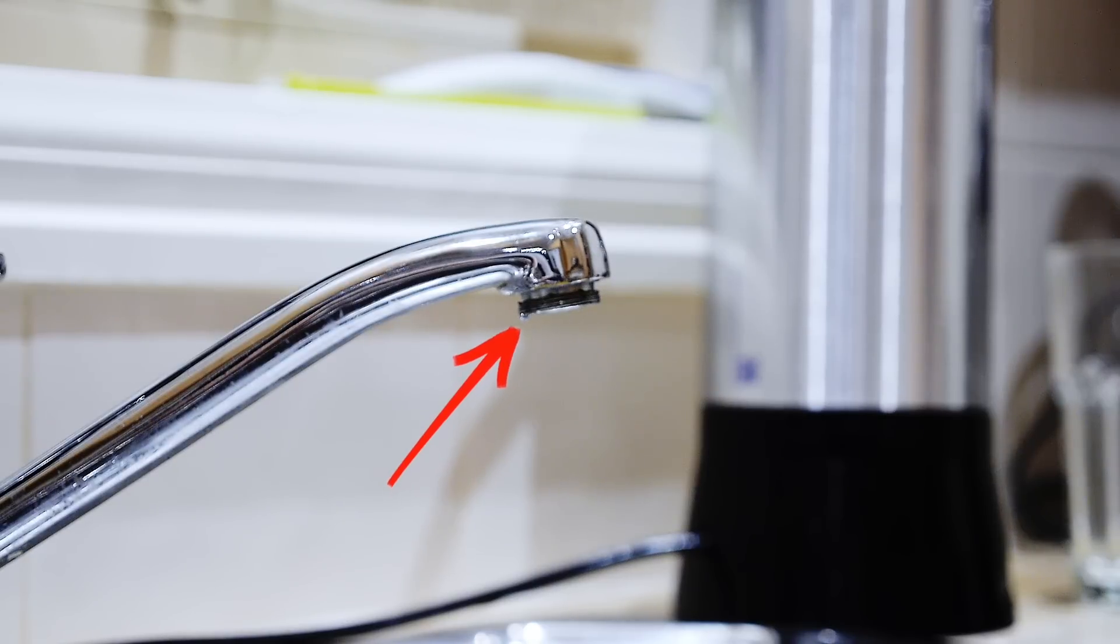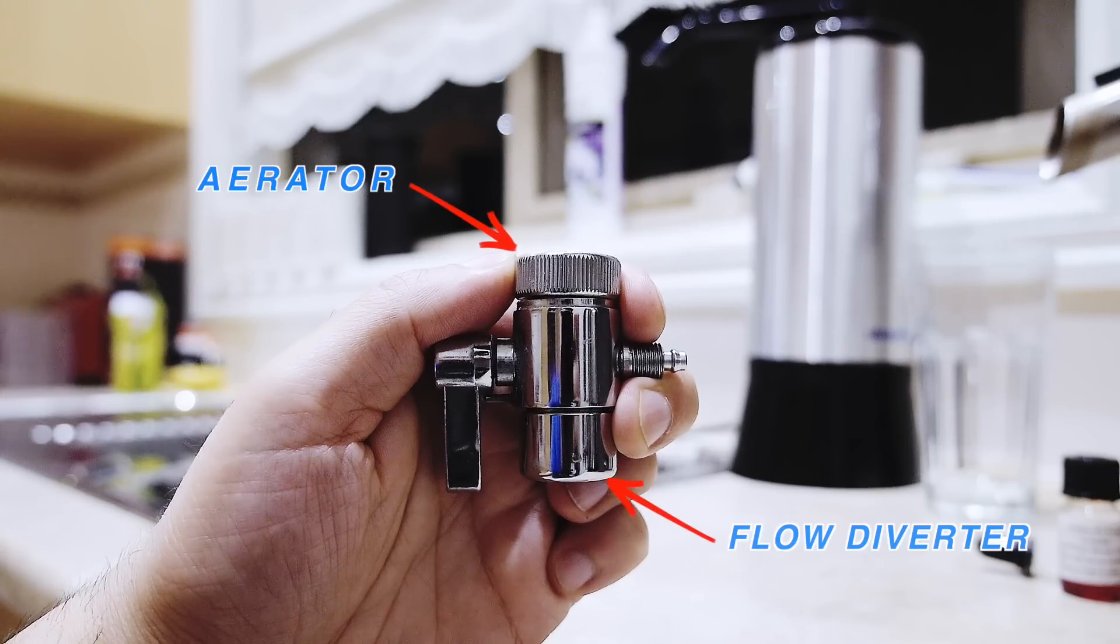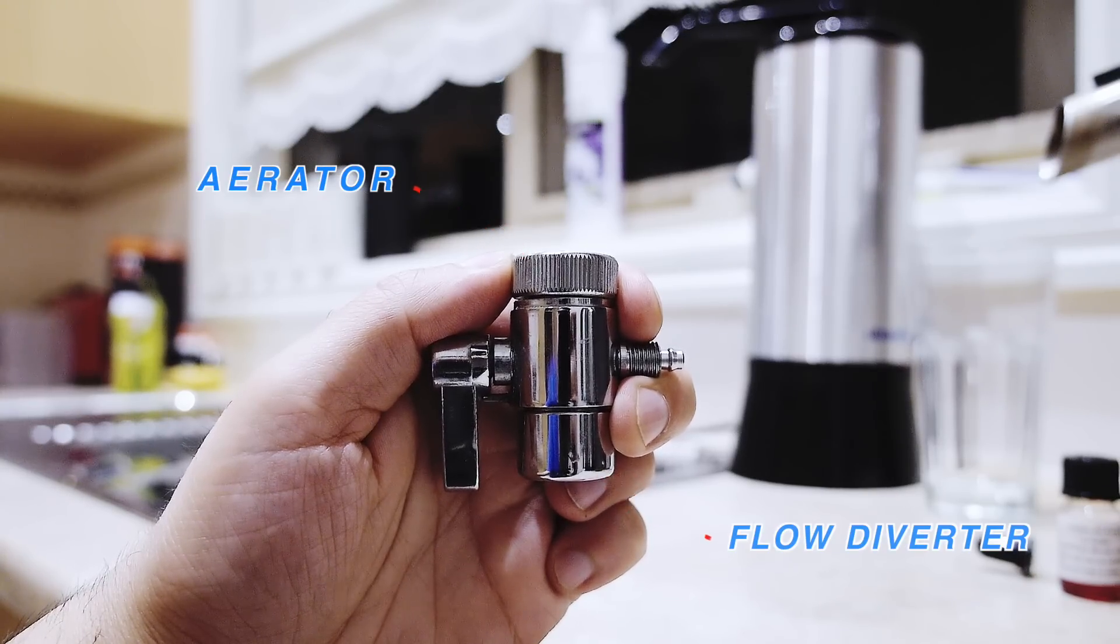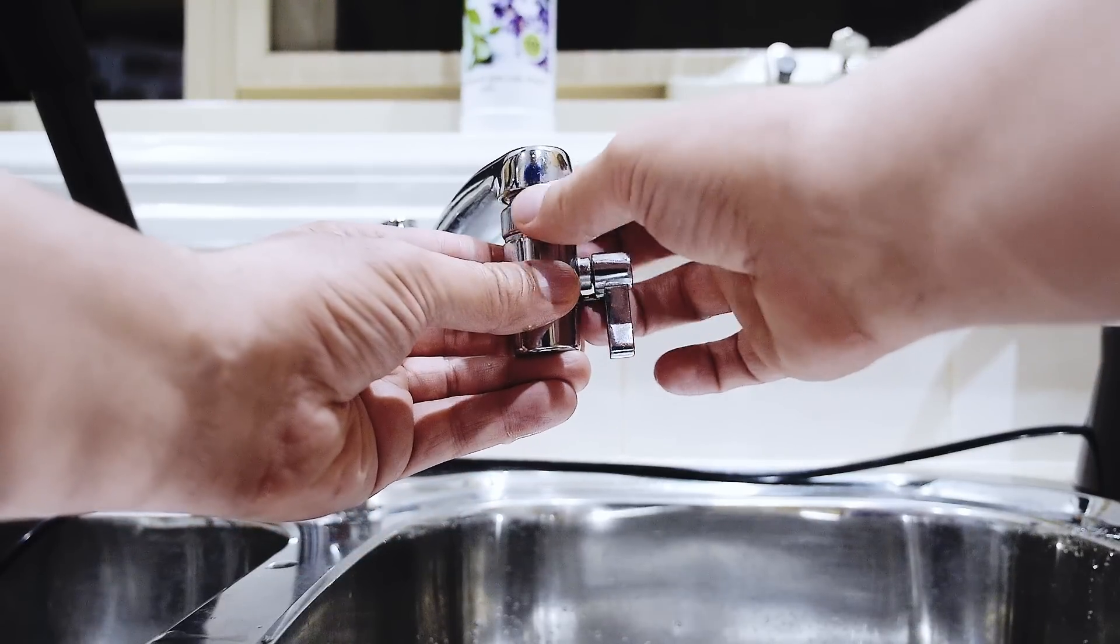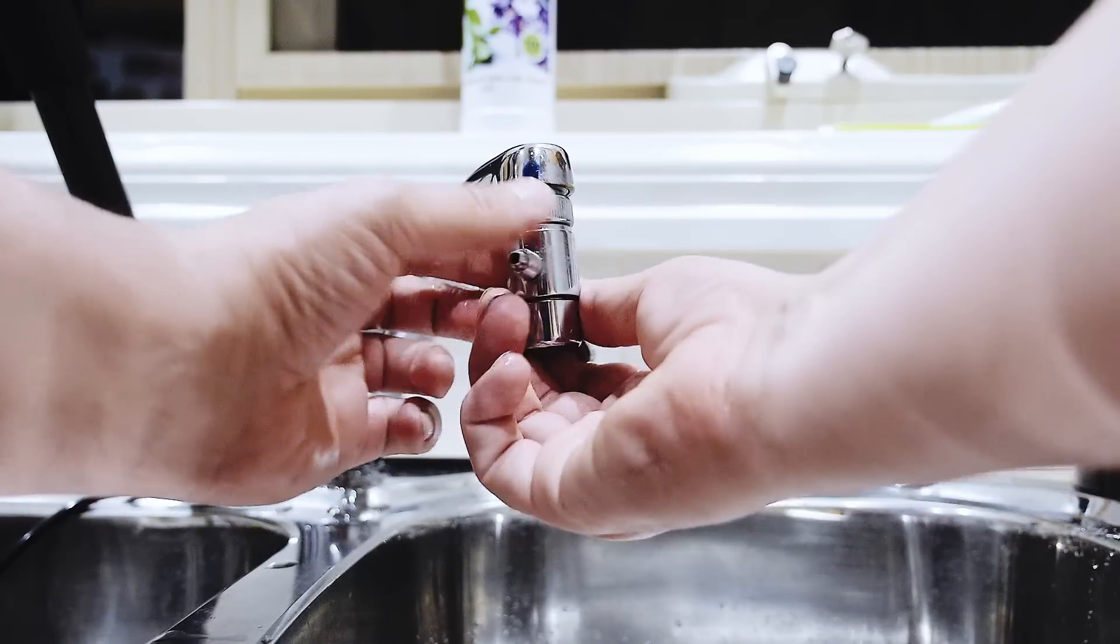So as you can see, I have removed the aerator from the tap and simply screwed it onto the flow diverter. This is what it should look like once you have joined the two together. Now it's time to screw this back onto the tap and just make sure that you keep winding it around until it's nice and tight.